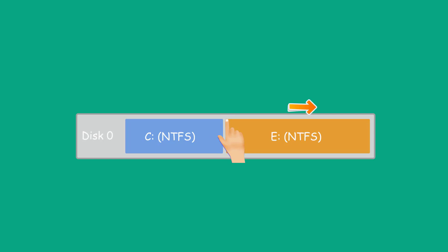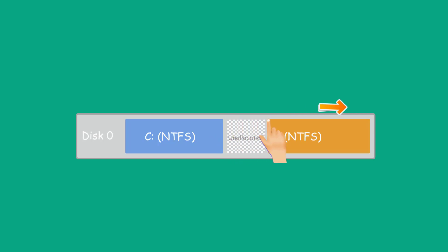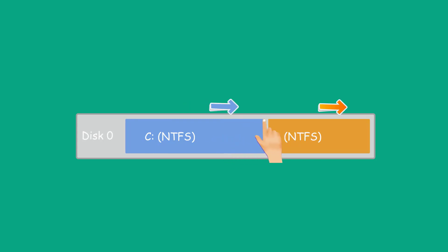Press and hold the left side of the E partition and drag it to the right to get the unallocated space of the corresponding size. Then long press the right side of the C partition and drag it to the right to complete the partition expansion.